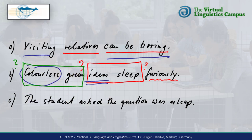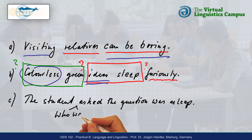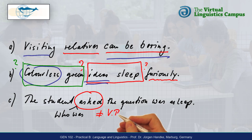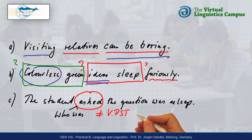At first sight, the third sentence seems to be meaningless or even ungrammatical, but it is not. The problem is that it involves a reduced relative clause, which can be shown by adding 'who was'. By default, however, we tend to analyse 'asked' as a finite verb in the past tense, but here it is a past participle.